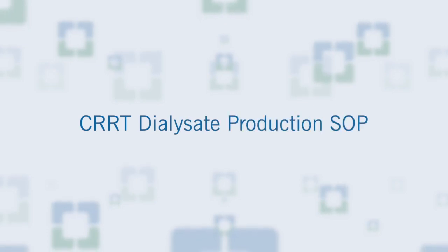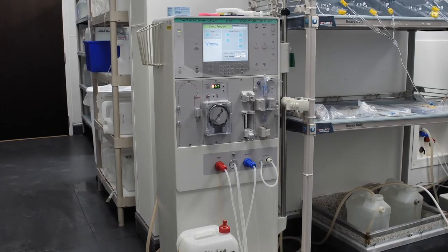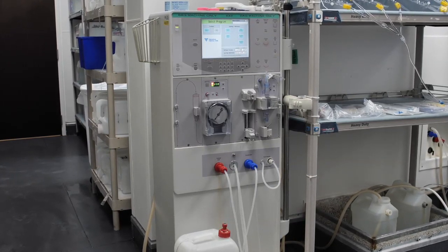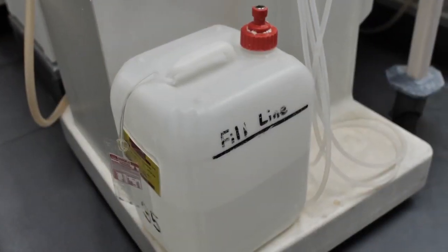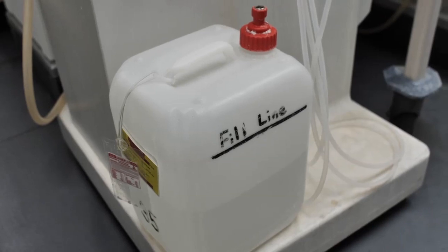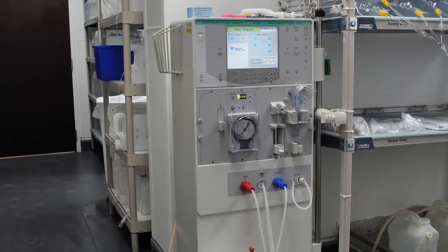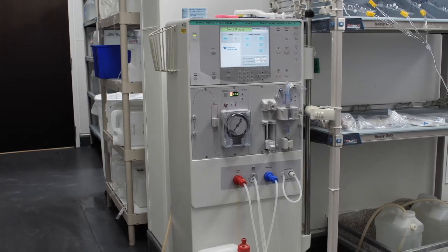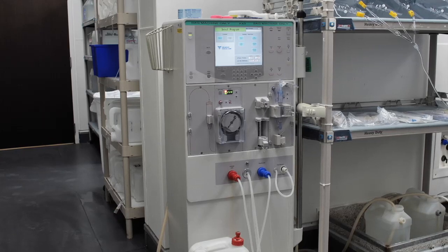This is the CRRT Ultrapure Dialysate Production SOP. The solution is prepared using a volumetric single-pass dialysis machine. Fresenius 2008-T and K2 are used here. These single-patient proportioning dialysis machines use two concentrates, acid and bicarbonate, and mixes reverse osmosis product water with the concentrates to create dialysate.